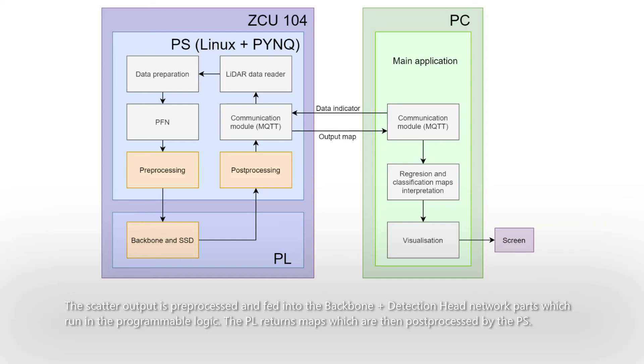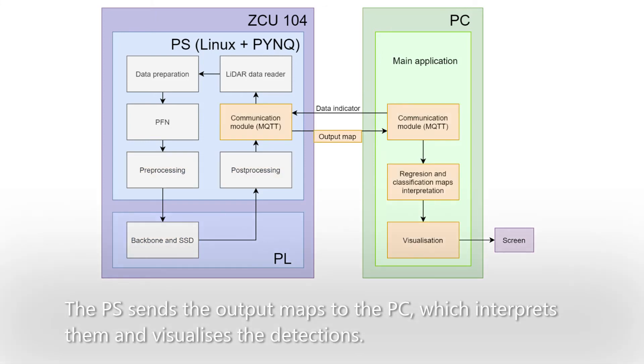The PL returns maps, which are then post-processed by the PS. The PS sends the output maps to the PC, which interprets them and visualizes the detections.